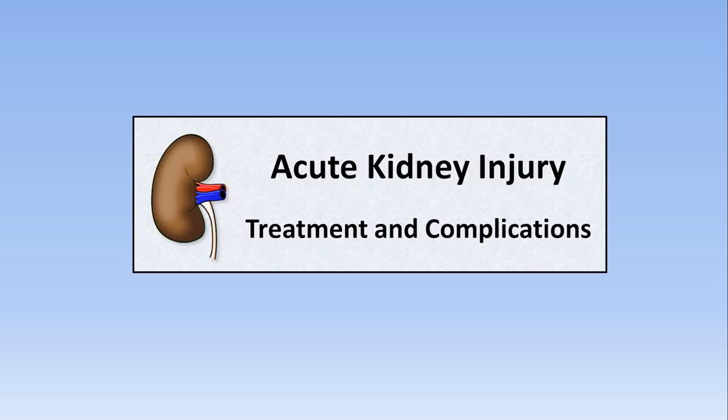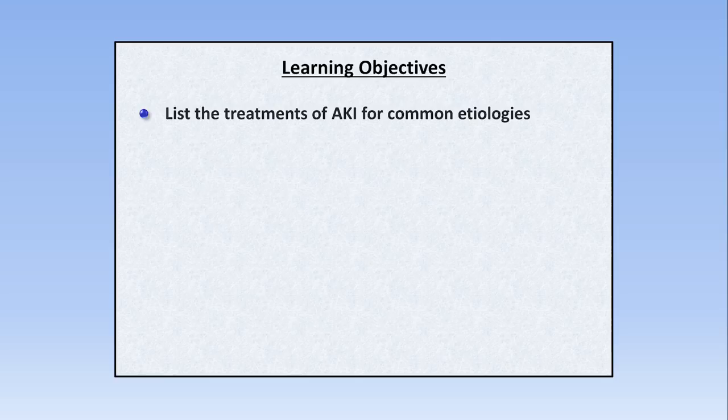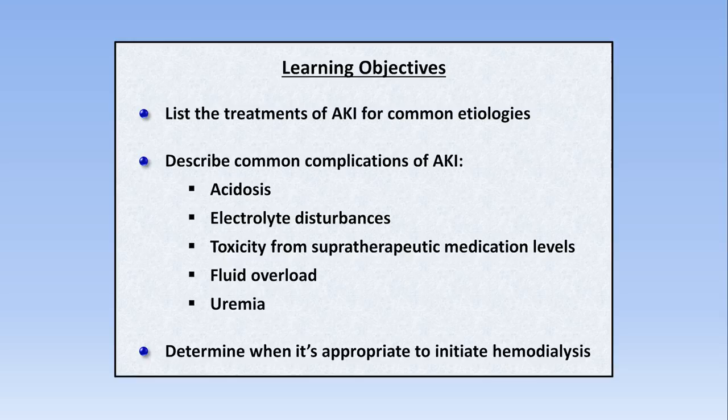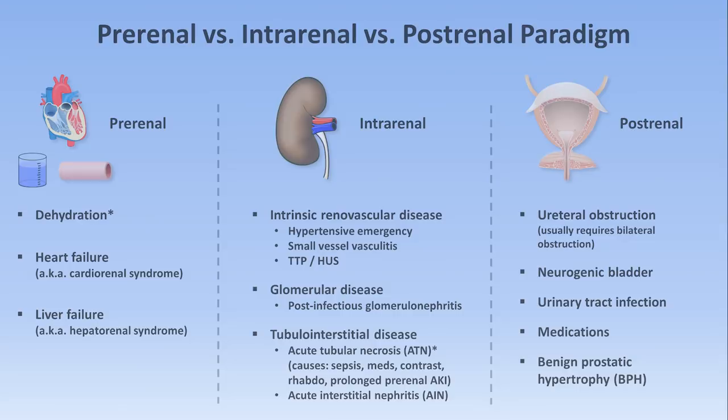In this final video on acute kidney injury, I'll be discussing treatment and complications. The learning objectives are to list the treatments of AKI for common etiologies, to describe common complications of AKI including acidosis, electrolyte disturbances, toxicity from supratherapeutic medication levels, fluid overload, and uremia, and to determine when it's appropriate to initiate hemodialysis.